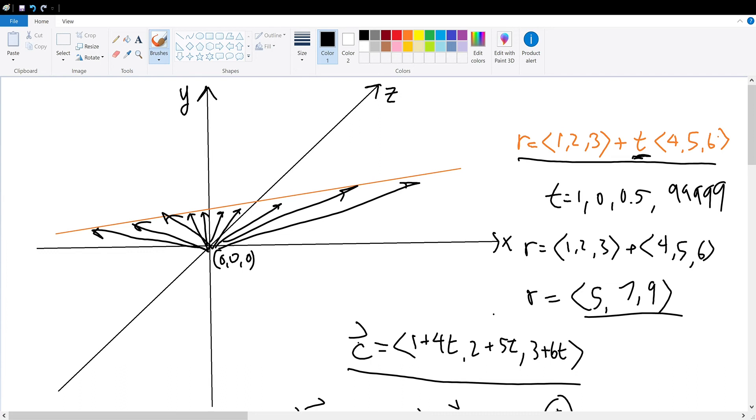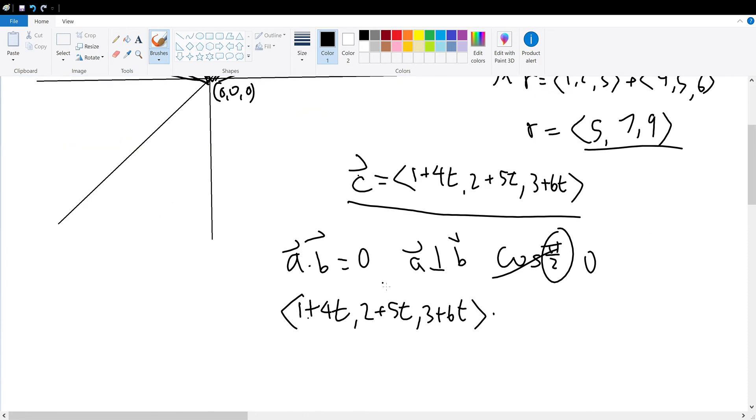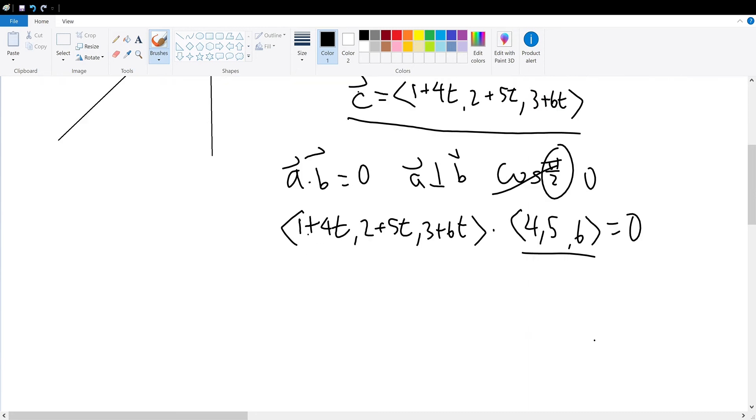As the shortest distance from the origin to the orange line is its perpendicular line. Therefore, dot product with its direction vector of 4, 5, 6. It will give us 0. This vector will be parallel to the orange vector. Therefore, the dot products will be 0. And then, we can solve for t and find out this coordinate point and its vector likewise.